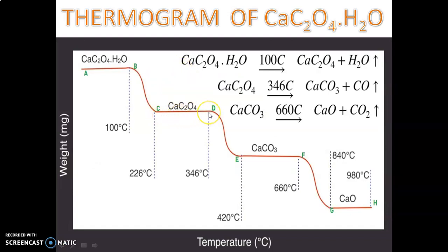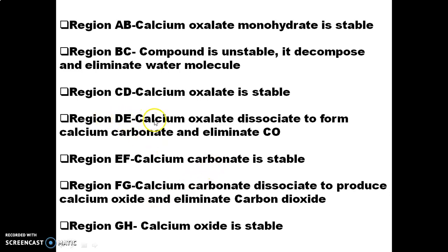In region C to D, the curve is a straight line, meaning calcium oxalate is stable between 226°C and 346°C. But again in region D to E there is a mass change. From the equations it is clear that calcium oxalate decomposes and is converted to calcium carbonate by releasing carbon monoxide. So in region D-E, calcium oxalate is unstable and dissociates to form calcium carbonate, eliminating carbon monoxide.